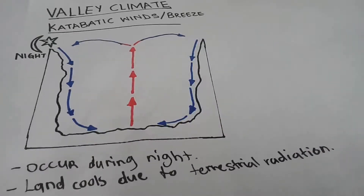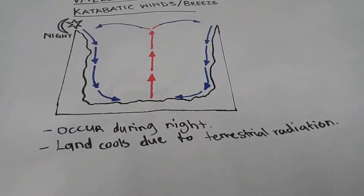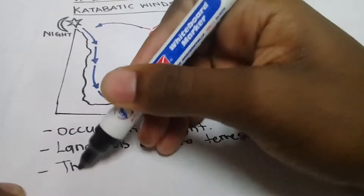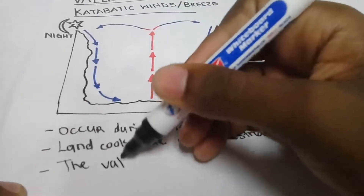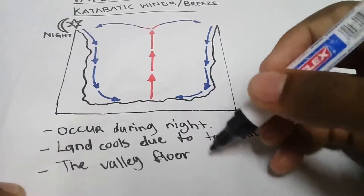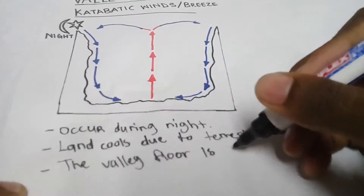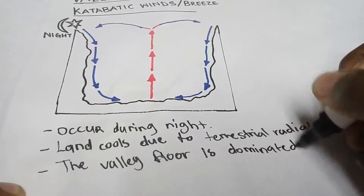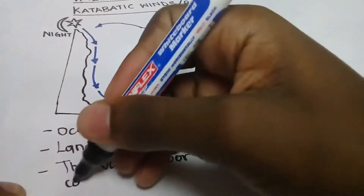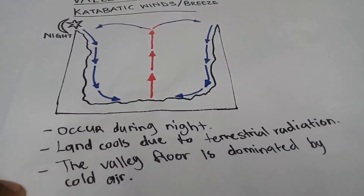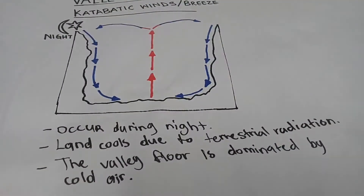These are katabatic winds — they occur during the night. The valley floor is dominated by cold air.